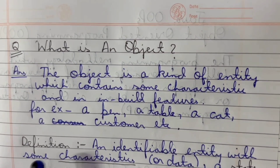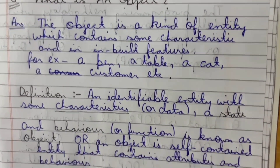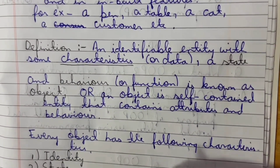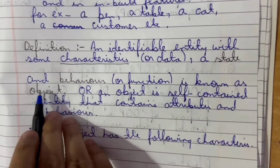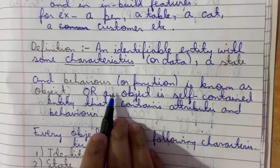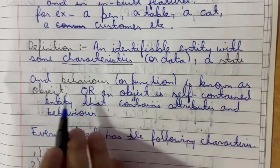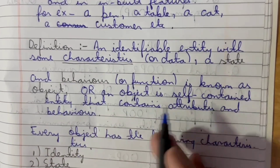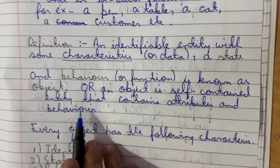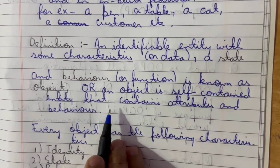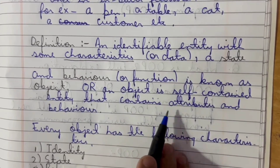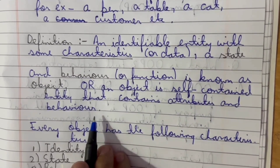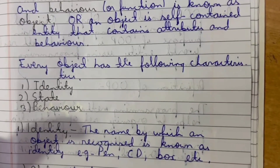The basic definition of an object is: an identifiable entity with some characteristic, a state and behavior, is known as an object. In other words, an object is a self-contained entity that contains attributes and behavior.